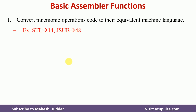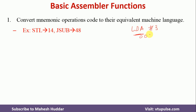The first function of an assembler is to convert mnemonic operations into their equivalent machine language. For example, for an instruction like LDA #3 — which means store value 3 into register A, the accumulator — we need to find the machine language value assigned to LDA. The value of LDA is 00, STL is equivalent to 14, and JSUB is equivalent to 48.